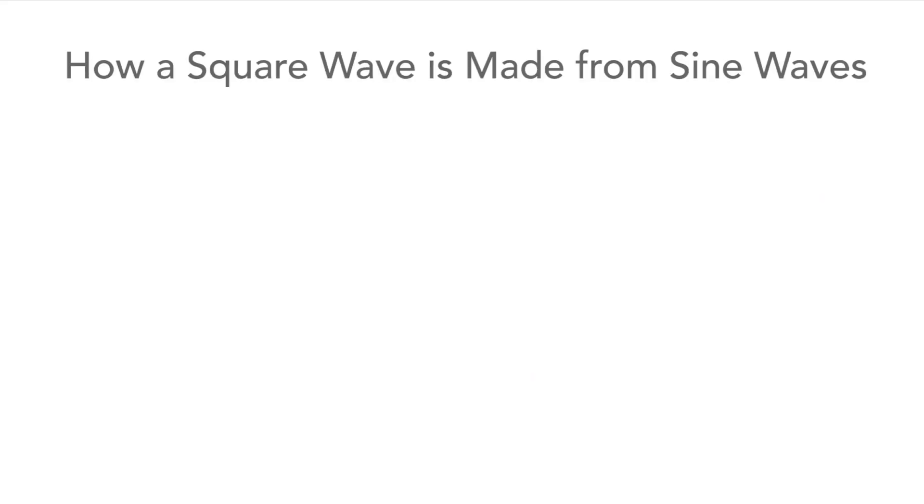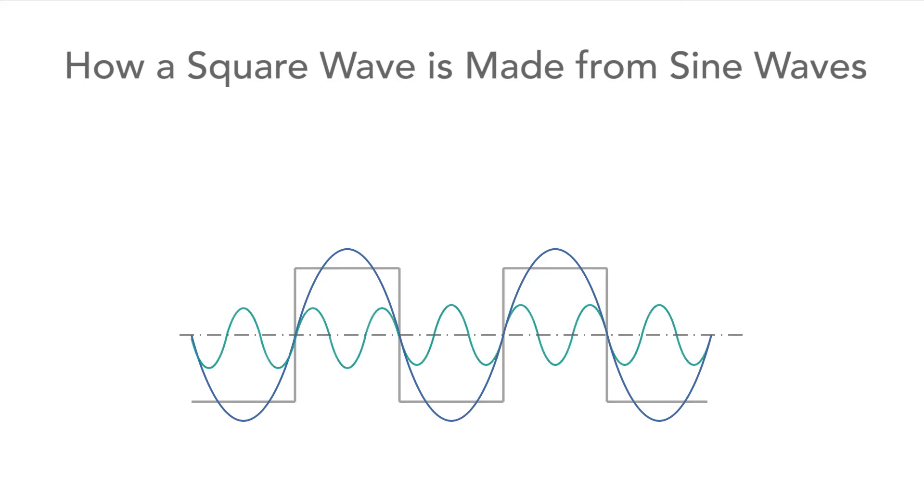But other periodic or repetitive waveforms are made up from sine waves. Take the example of a square wave. This is made up from a series of sine waves. The fundamental corresponds to the basic repetition rate of the square wave, and then the third harmonic is at a level of a third of the fundamental, and the fifth harmonic is at a level of the fifth of the fundamental, and so forth.